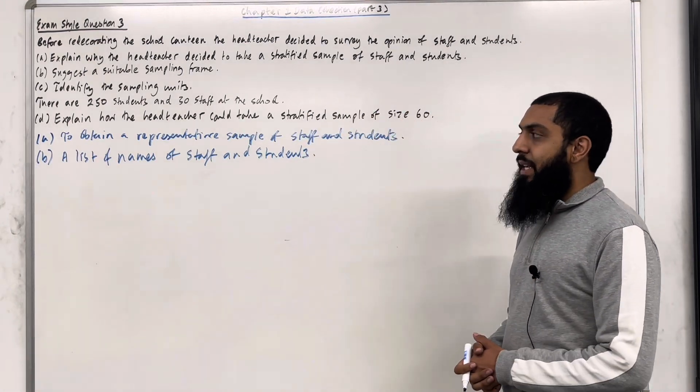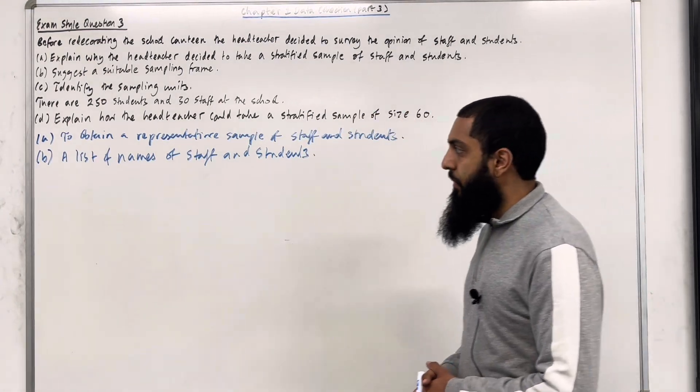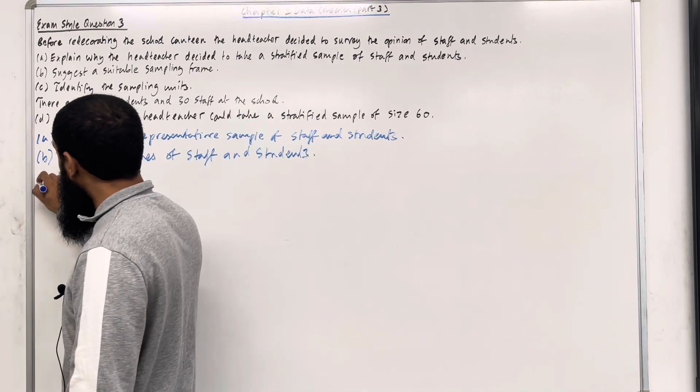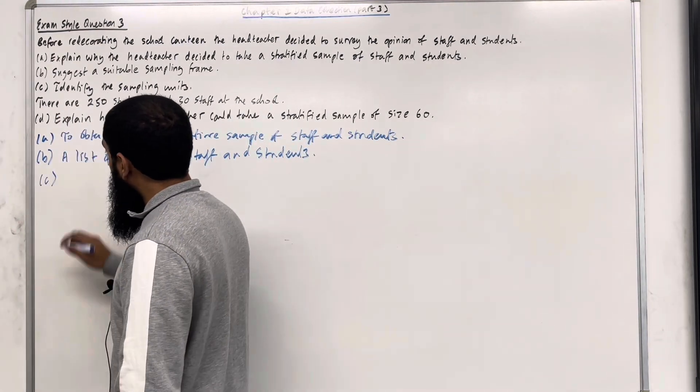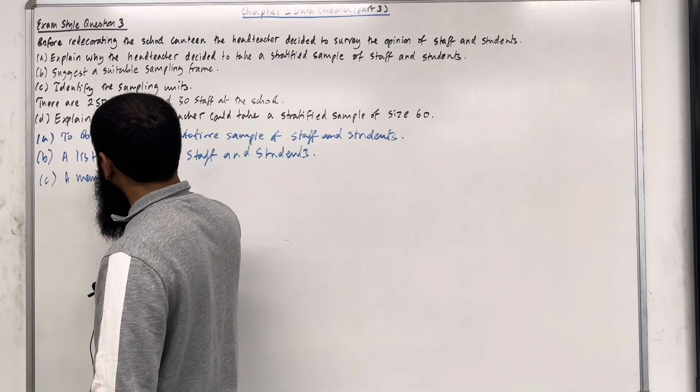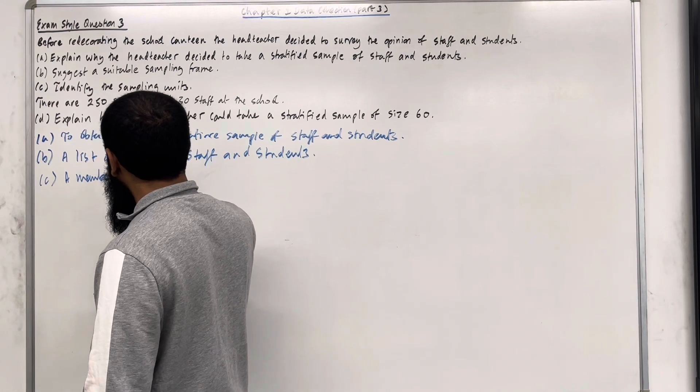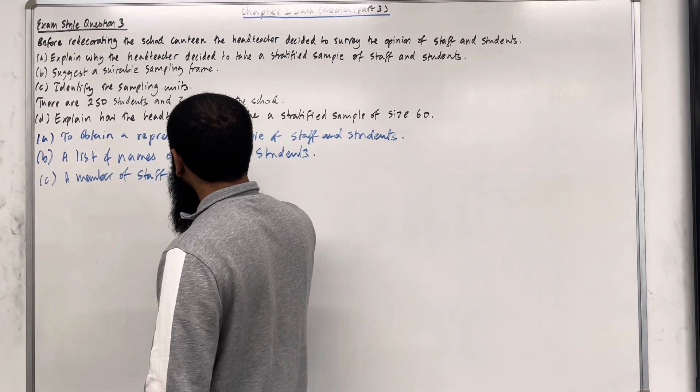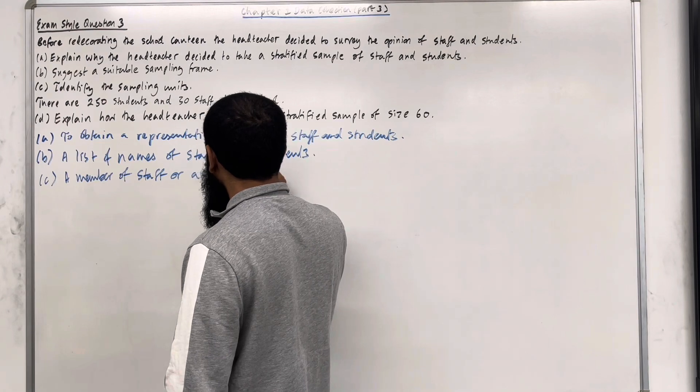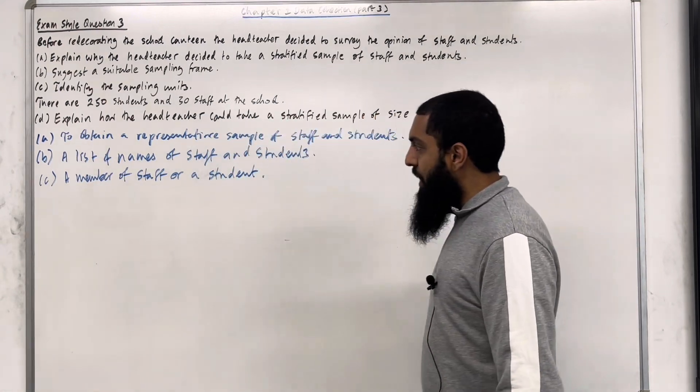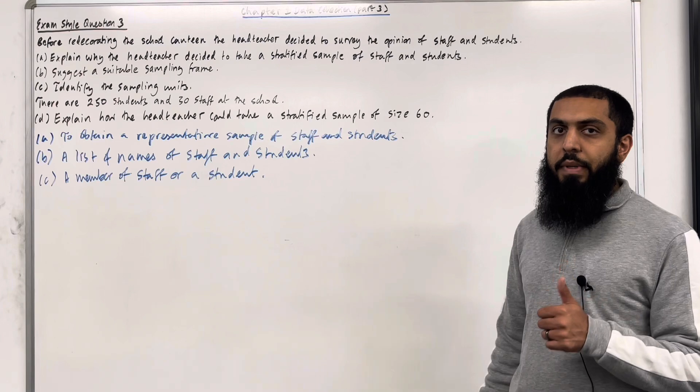Part C: Identify the sampling units. So in part C, we can write down a member of staff or a student. So the sampling unit could be a student or it could be a staff member.